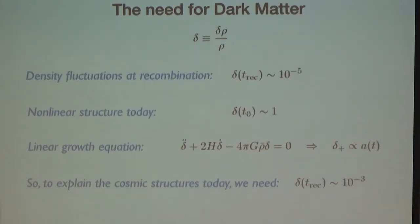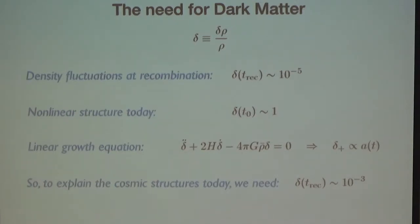What dark matter does is that when you plug it into the model, it can start growing before recombination because it does not feel the radiation pressure. So it has already started growing before recombination, and then when the baryons decouple from the photons, they catch up with the dark matter fluctuations.